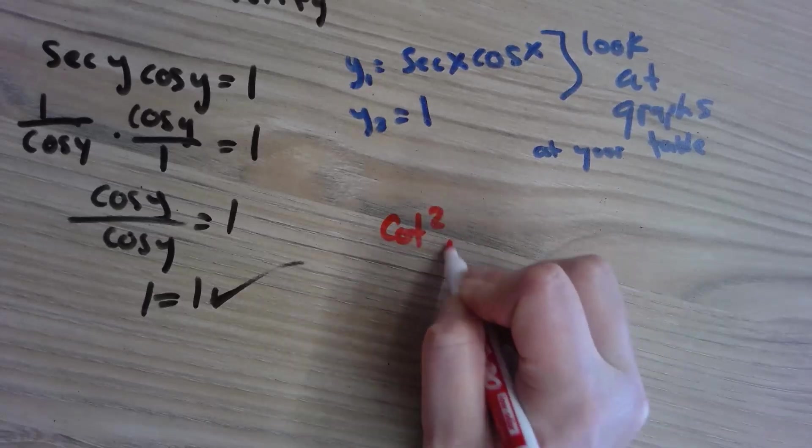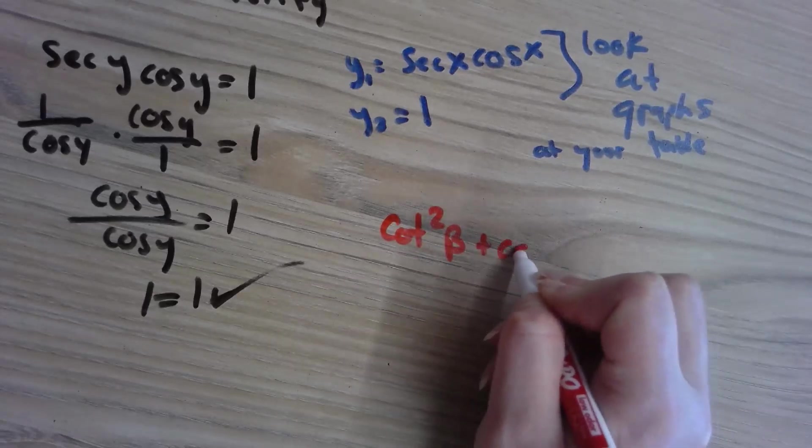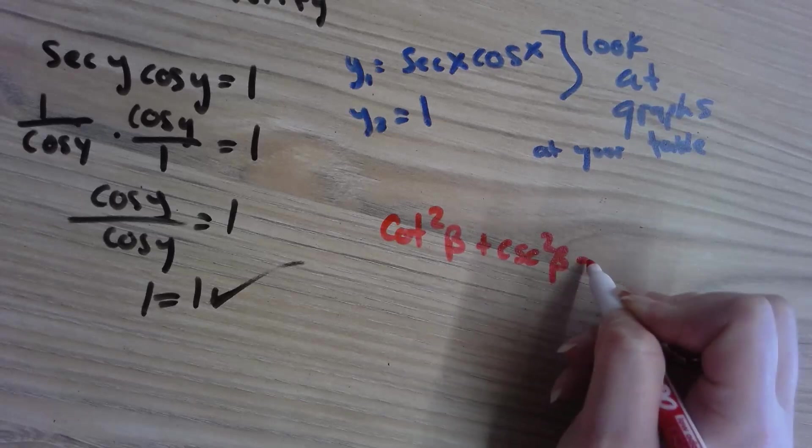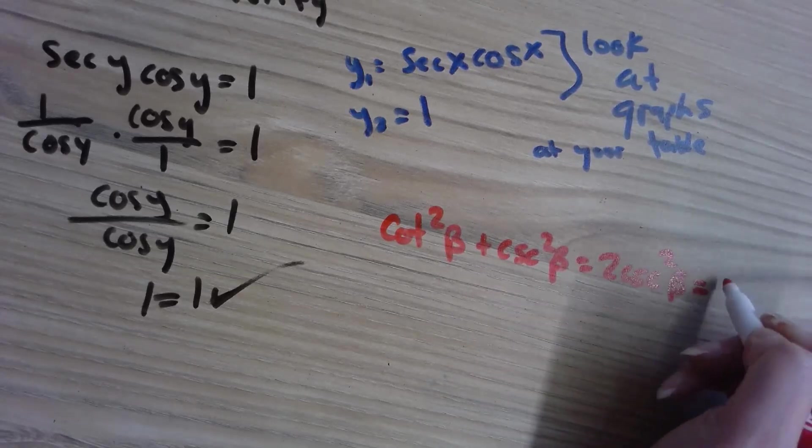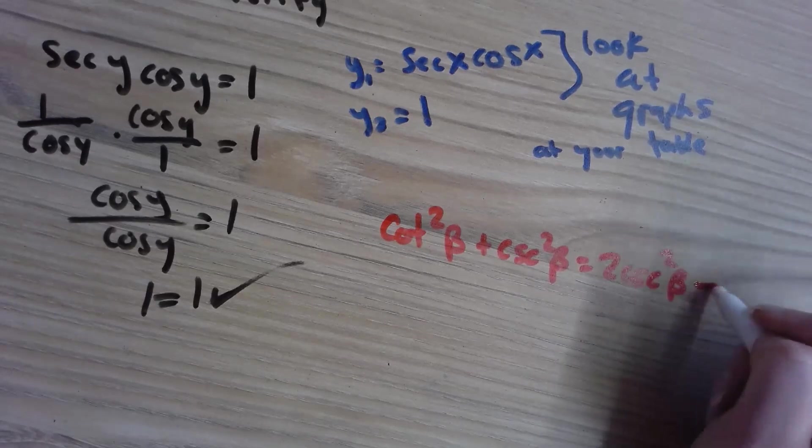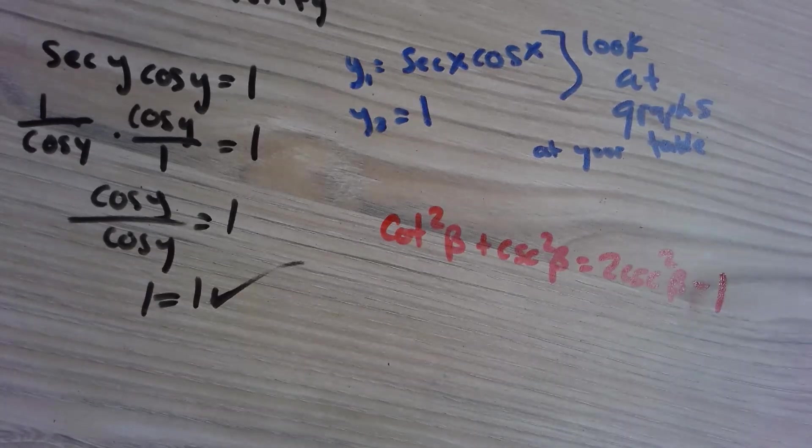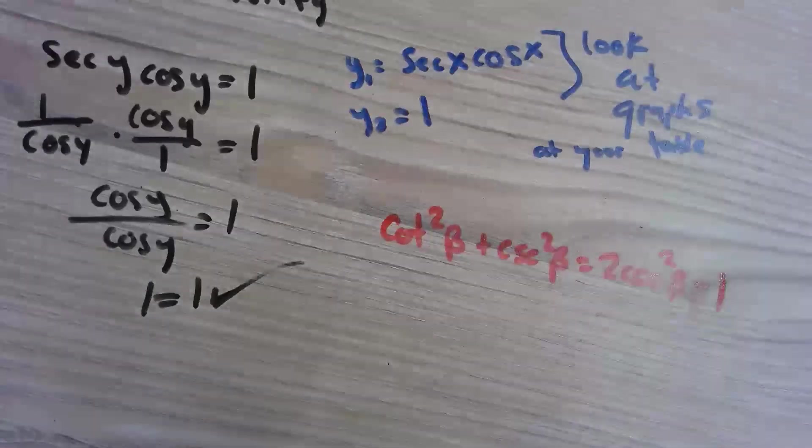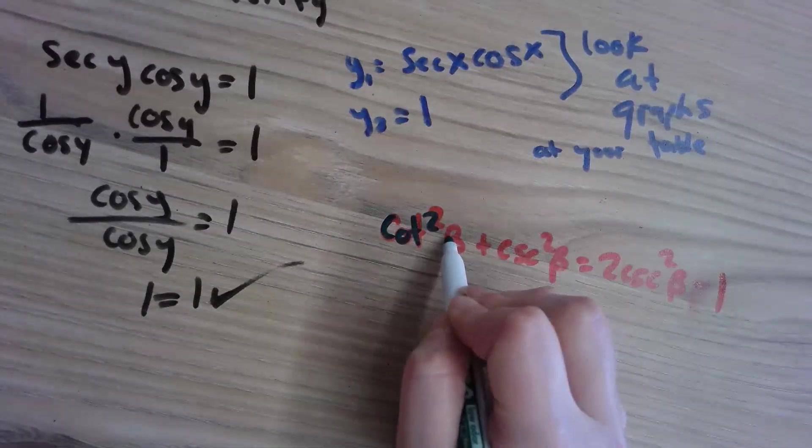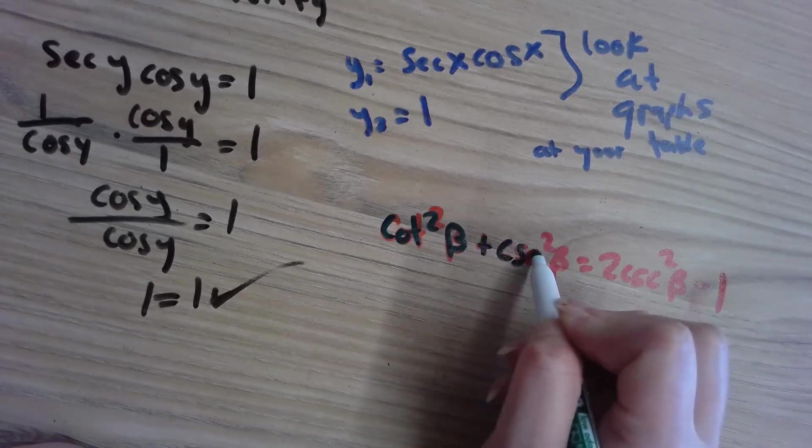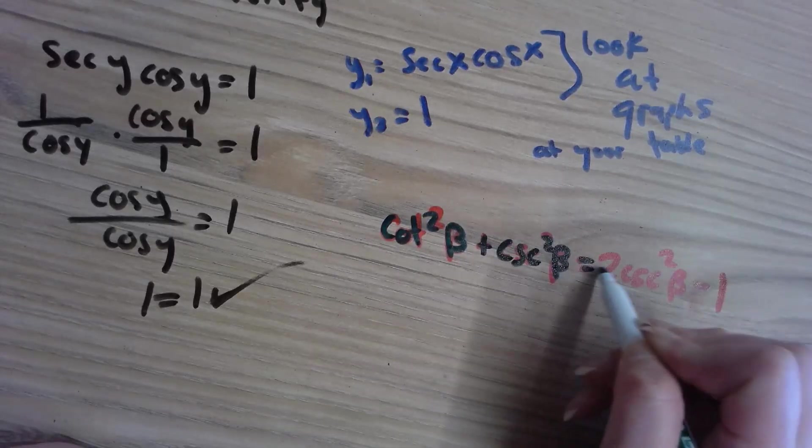Our next one is cotangent squared beta plus cosecant squared beta equals two cosecant squared beta minus one. That red is not easy to see. Okay, that's better.